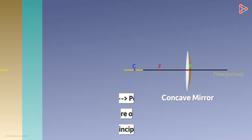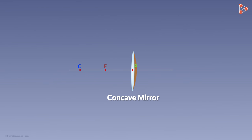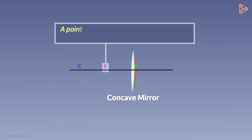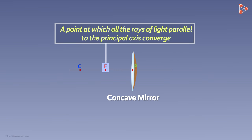Let's remove the convex mirror for a while and concentrate on the concave mirror. This focal point of a concave mirror is a little more than just a midpoint — it's also a point where all the rays of light parallel to each other as well as to the principal axis converge after reflection. Let's try to understand this statement in detail.